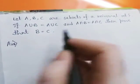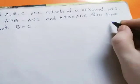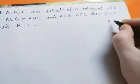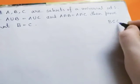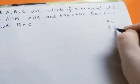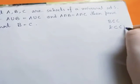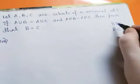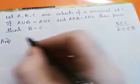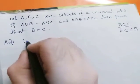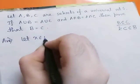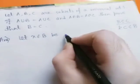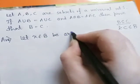To show B equals C, we have to show that B is a subset of C and C is a subset of B. So first we show B subset of C. Let x belong to B be arbitrary.